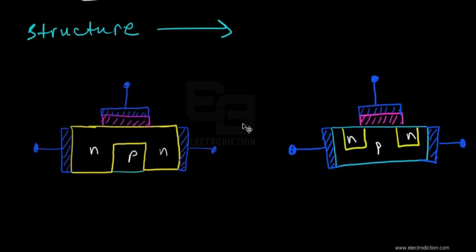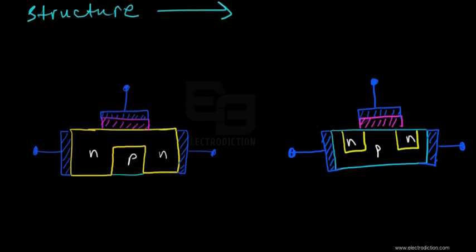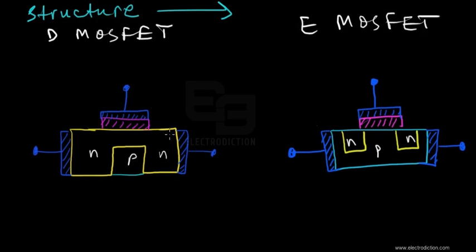Here's the diagram. Taking a good look, you'll see there are two different types of diagrams for the MOSFETs. The one on the left gives us the structural diagram of the D-MOSFET, and on the right we have the structural diagram of the E-MOSFET.